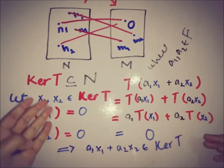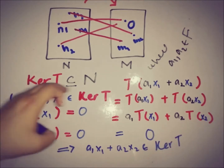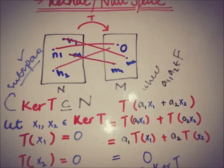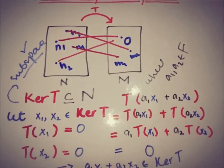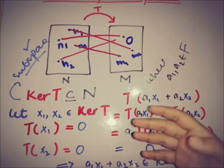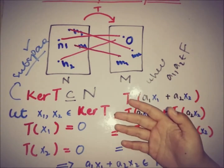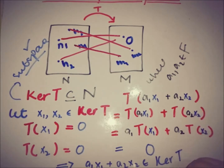This implies that a1·x1 + a2·x2 is also a member of ker(T), which means ker(T) is a subspace. So kernel of T is not only a subset of N but also a subspace of N. We have proved that the kernel of T is a subspace of the linear space N, and this is what the kernel and null space of a linear operator is.